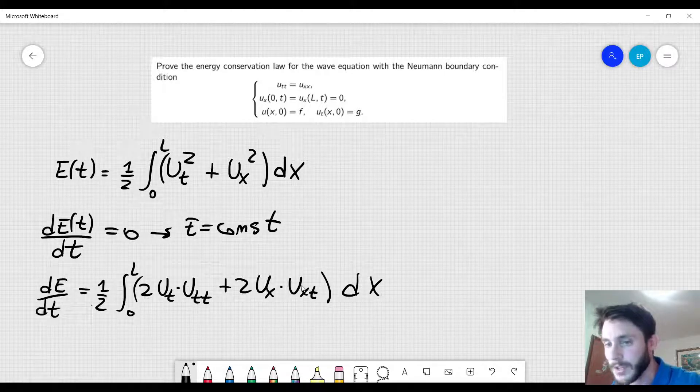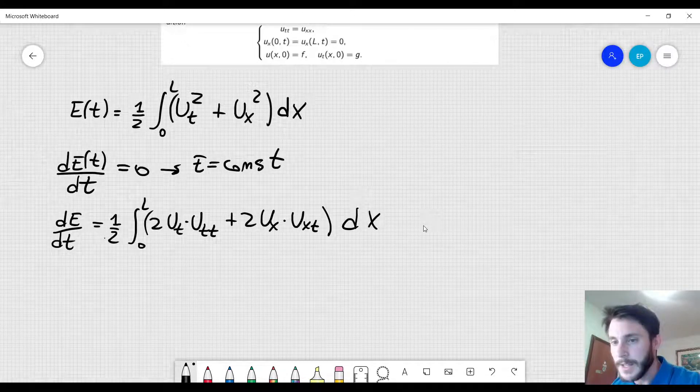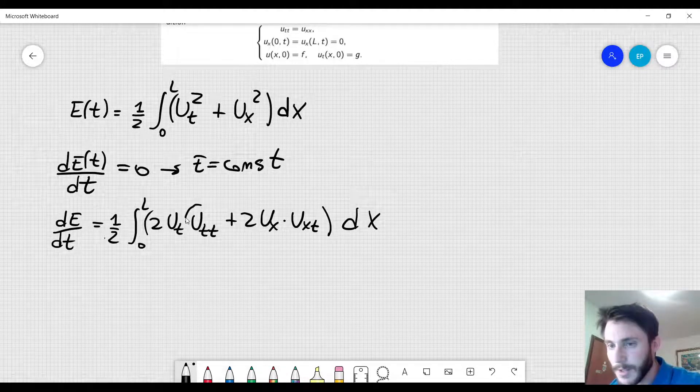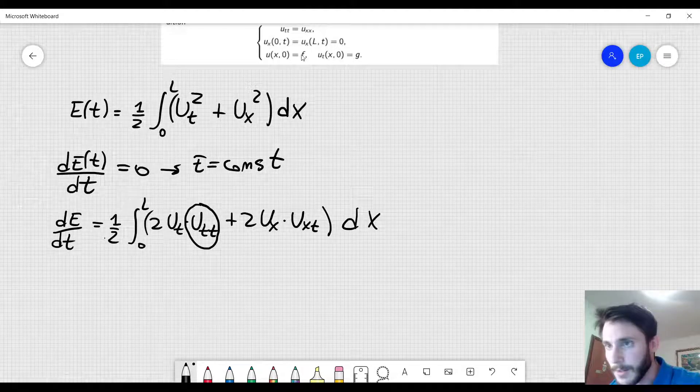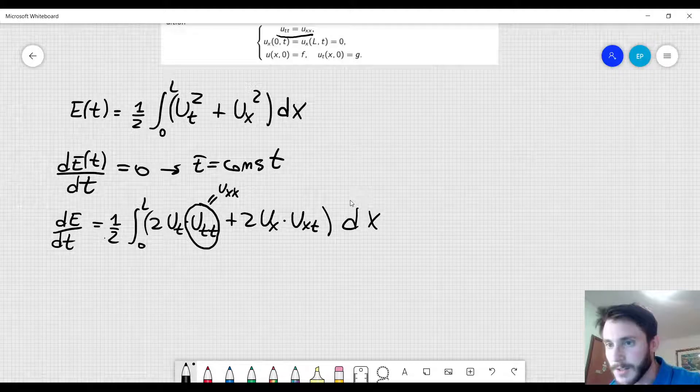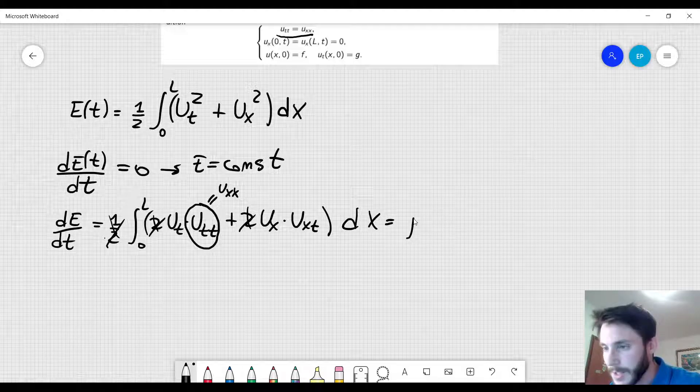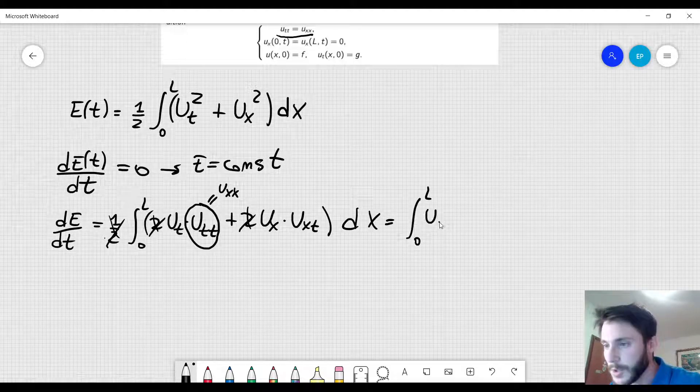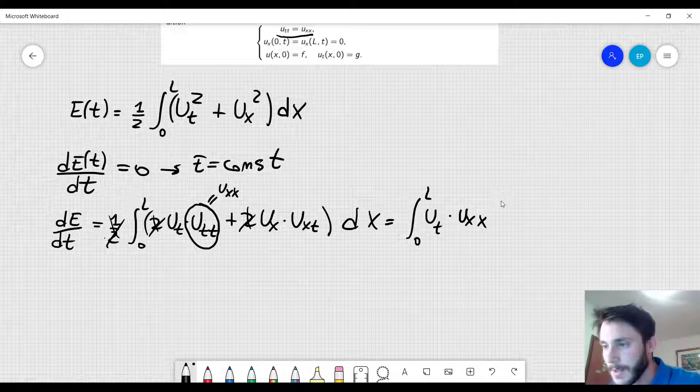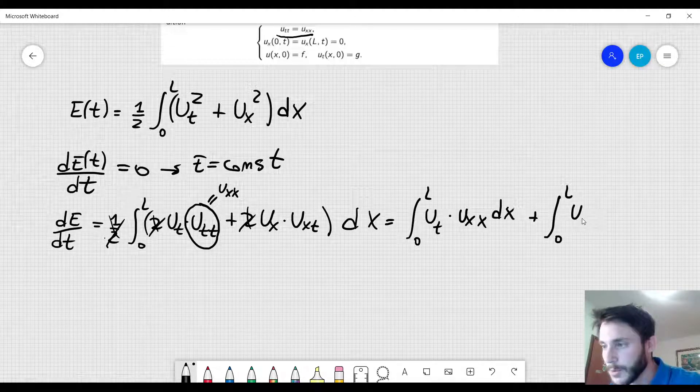So I have taken a partial derivative of those functions and now I can also use the wave equation which tells me that u_tt is equal to u_xx and I can also cancel these factors of 2 here. So I can rewrite this as integral from 0 to L of u_t times u_xx dx plus integral from 0 to L u_x u_xt dx.